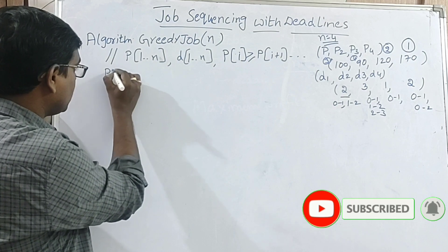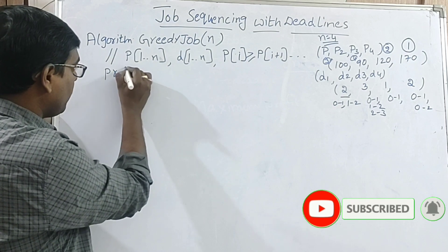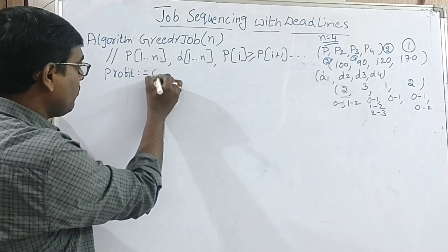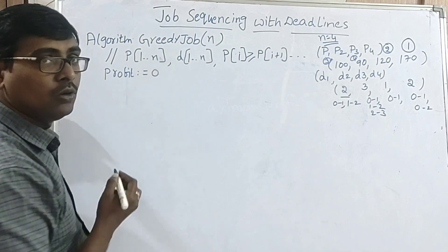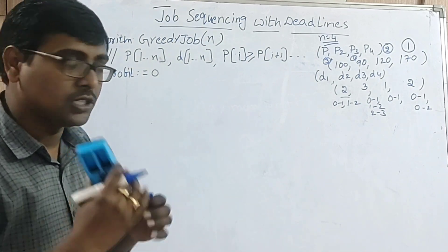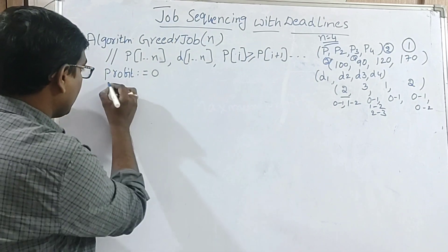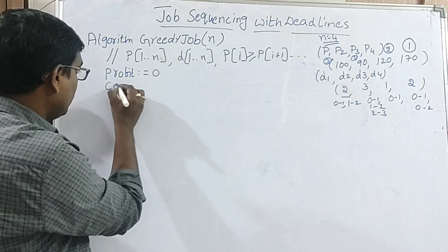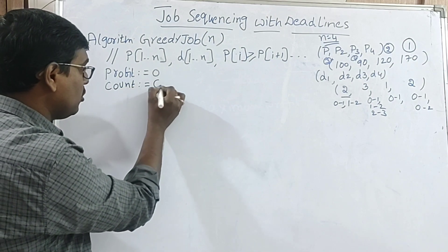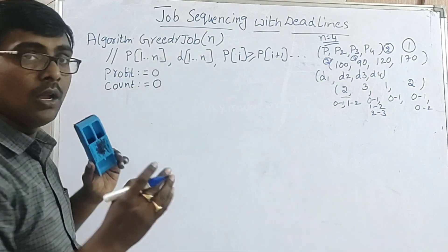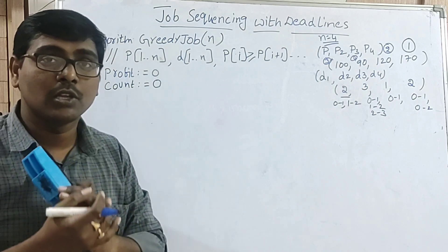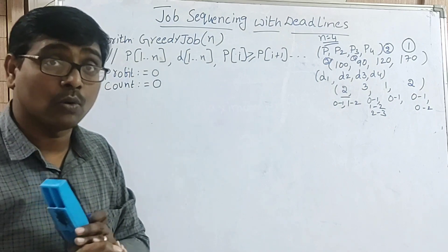Here I am using a variable profit, initially equal to zero — meaning no job is executed yet. Count is another variable, initially zero. Count specifies how many jobs have been executed so far.